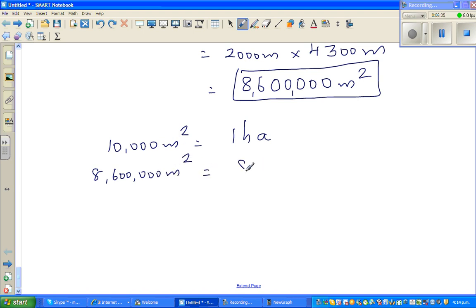So I have got eight million six hundred thousand meters squared would be this divided by this. So this is 86, how many zeros? Five zeros, one, two, three, four, five, divided by ten thousand. So it has got four zeros.